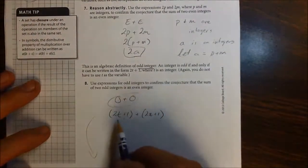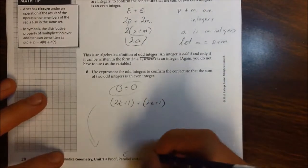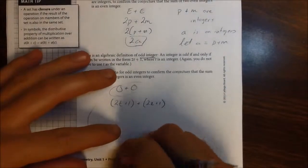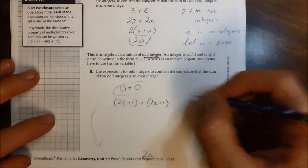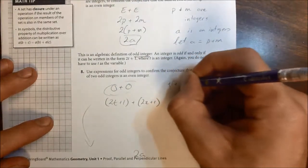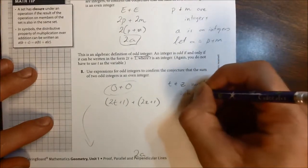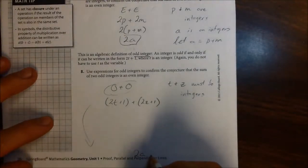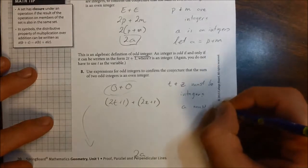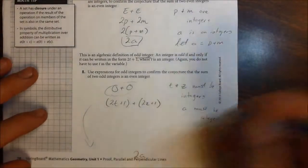We need to take this expression, 2t plus 1 plus 2z plus 1, and we need to get it down in the form of 2 times some integer. And we need to prove that it's an even integer. So, 2 times a. Just some parameters. Make sure that we remember that t and z must be integers. And later on down here, when we get here, a must be an integer as well.